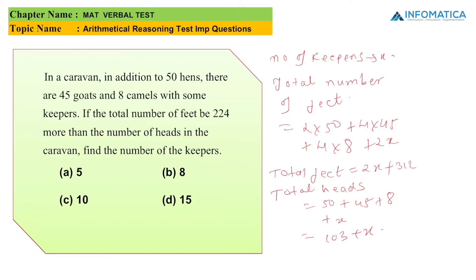As per the equation: 2X + 312 = 224 + 103 + X. The total feet is 2X + 312, and this equals 224 more than the number of heads. On solving this, X = 15. So option D, which is 15, is the right answer.